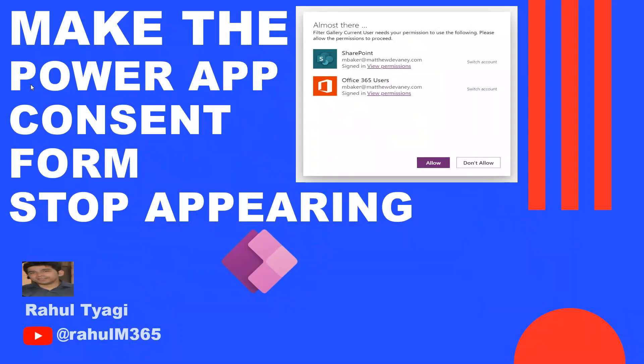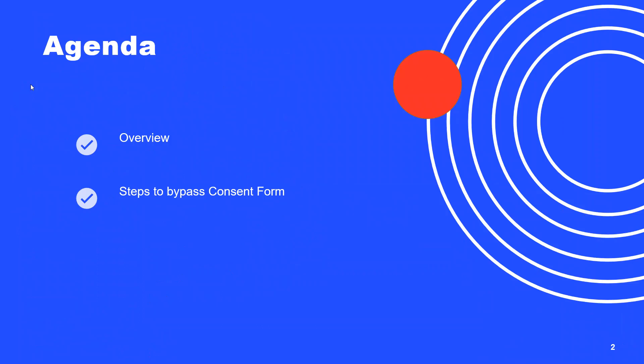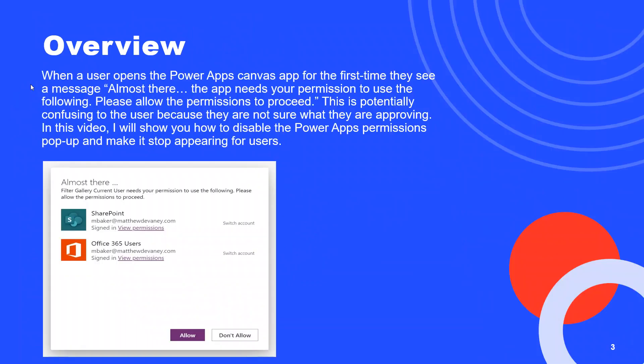Hello everyone, welcome to my YouTube channel. In today's video I will be showing you how to hide the consent form in Power Apps. I will give you an overview of the current problem statement and then show you the steps to bypass the consent form. When a user opens a Power Apps canvas app for the first time, they see the message 'Almost there, the app needs your permission,' which is potentially confusing to users. I will show you how to disable this Power Apps permission pop-up.